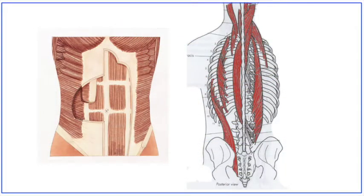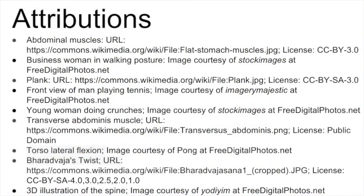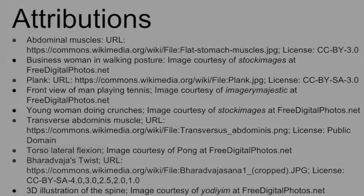In this video, we covered the muscles and joint actions of the spine, specifically the four abdominal muscles and the erector spinae. We discussed them in relation to various exercises where they function as stabilizers and movers. You may find it helpful to watch this video a few times and even think of more exercises that involve these muscles. Thanks for watching!